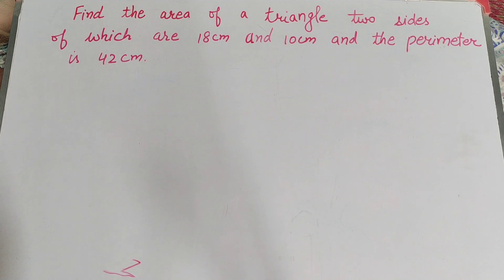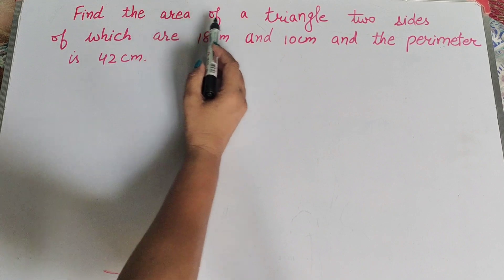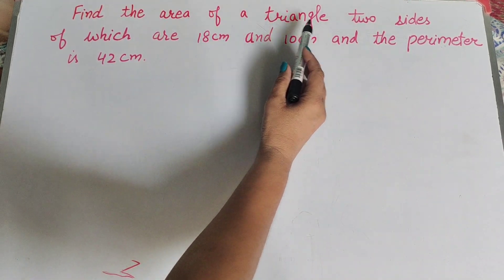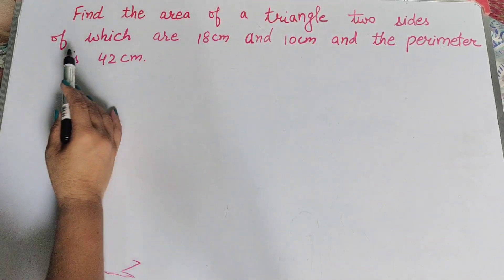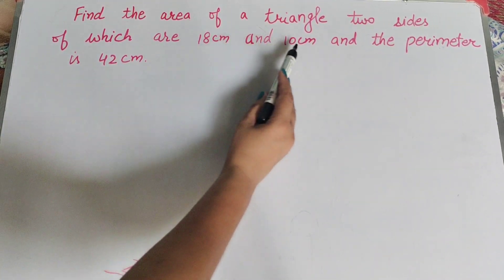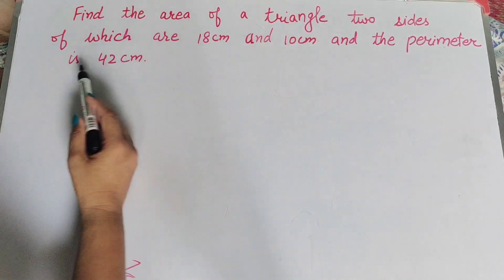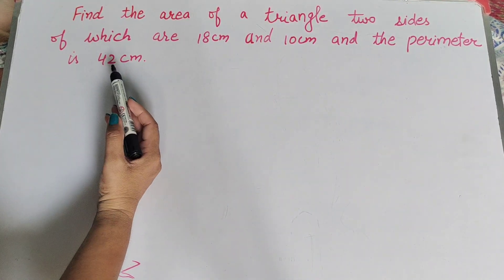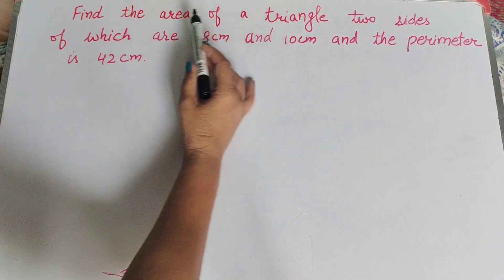Hello friends, welcome to my channel. In this video we discuss: find the area of a triangle, two sides of which are 18 centimeter and 10 centimeter, and the perimeter is 42 centimeter. So in this question we find the area of the triangle.